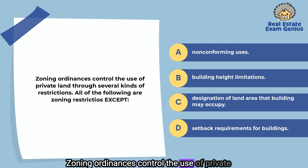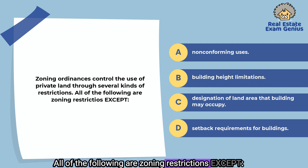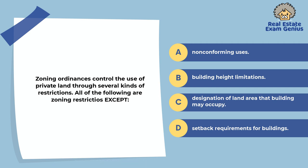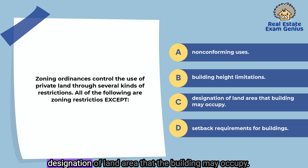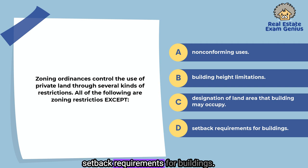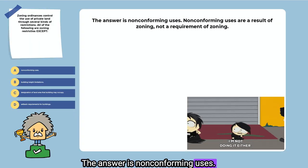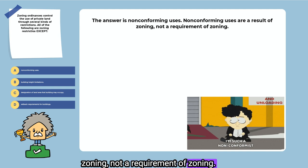Zoning ordinances control the use of private land through several kinds of restrictions. All of the following are zoning restrictions except: nonconforming uses, building height limitations, designation of land area that the building may occupy, or setback requirements for buildings. The answer is nonconforming uses. Nonconforming uses are a result of zoning, not a requirement of zoning.